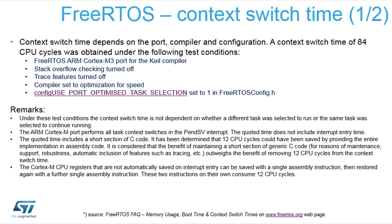The switching time depends on the interrupt latency, and on Cortex-M it is somehow fixed. There were some test conditions: it was compiled with Keil for Cortex-M3, the stack overflow checking was turned off to show just pure context switching, compiler optimization was set for speed, and there was also a macro port optimized task selection enabled. It was also measured using Cortex-M4 and M7, which guarantees that floating point registers are stored in the TCB and restored.